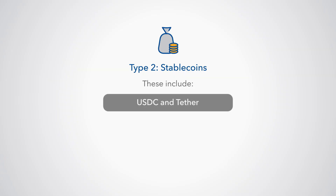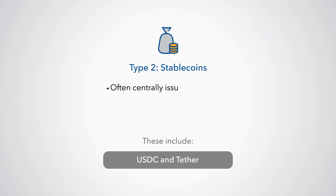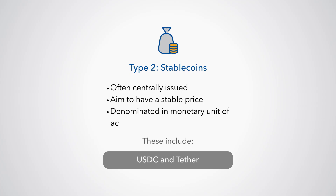Second, we have stablecoins, like USDC and Tether. These are crypto tokens, often centrally issued, that aim to have value stability through reserve assets, like cash and commodities, or through algorithms that respond to demand and supply. Stablecoins are denominated in a monetary unit of account, such as a dollar, and some pledge to redeem in cash at par. Others only allow direct claims to a subset of their users.